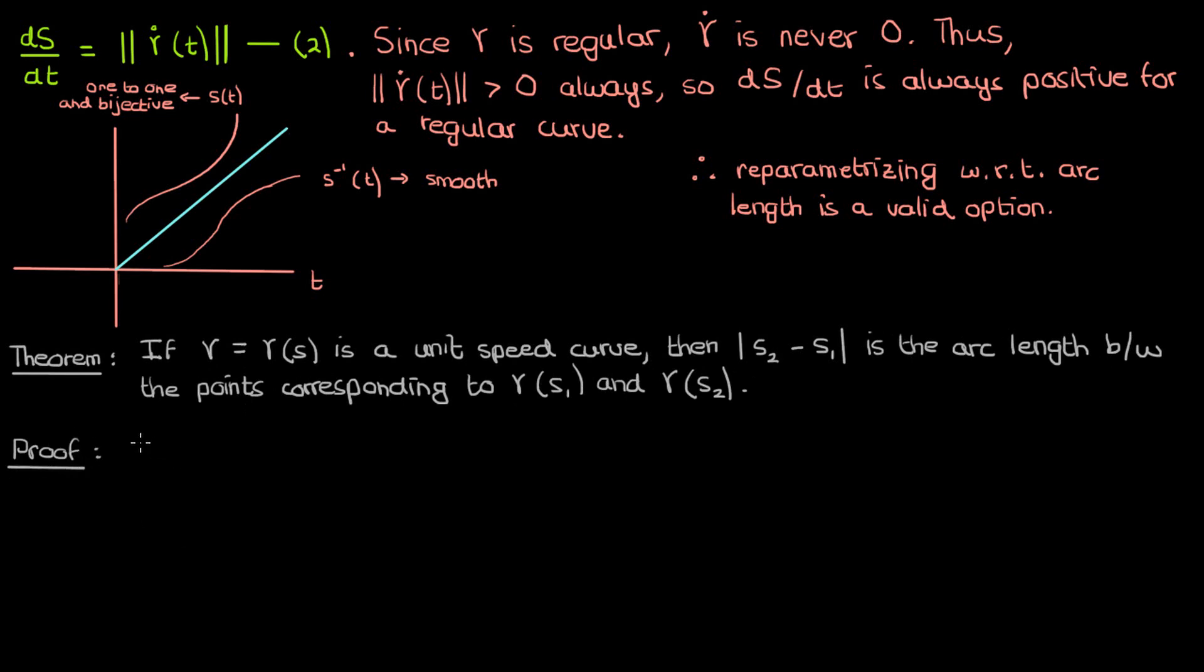Since γ(s) is a unit speed curve, the magnitude of its derivative with respect to s is 1 by definition of the unit speed curve. Now by definition of arc length, the arc length s from s₁ to s₂ of γ is the magnitude of the first derivative integrated from s₁ to s₂,